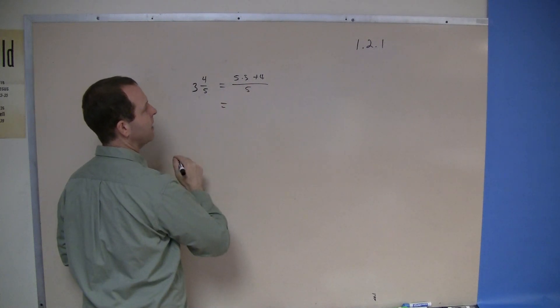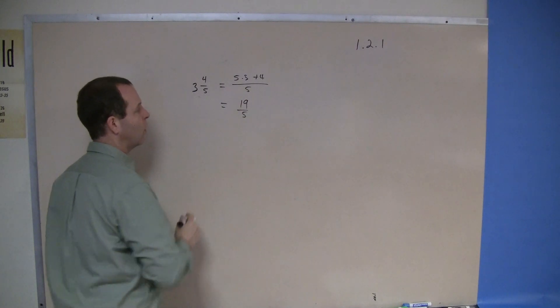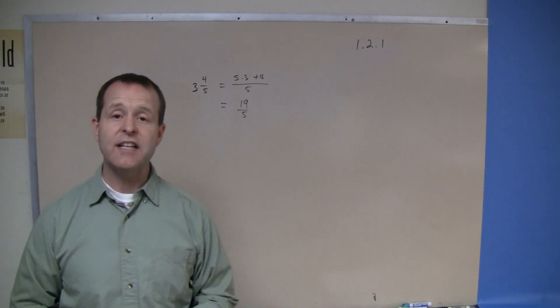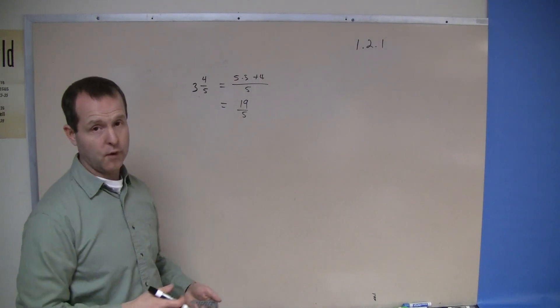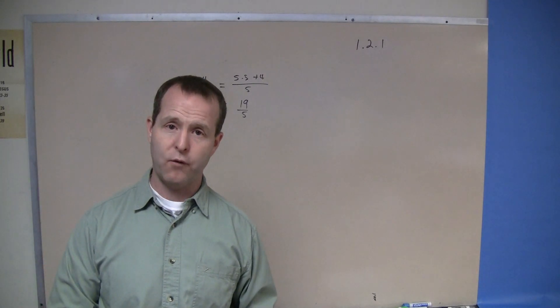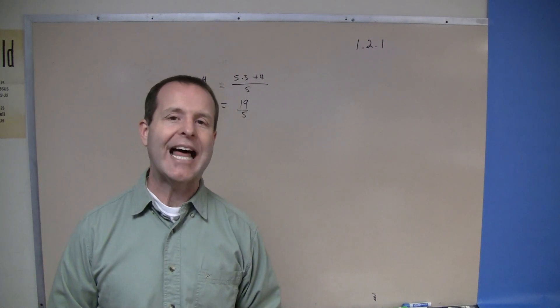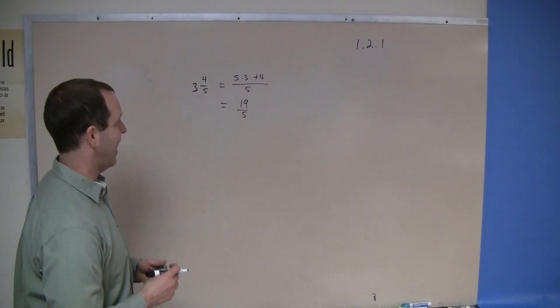So 5 times 3 is 15, 15 plus 4 is 19, all over fifths. So 19 fifths is equivalent to 3 and 4 fifths. Those are the same. One's just written in mixed number form, one's written as an improper fraction. And typically we like to have them in improper fractions.